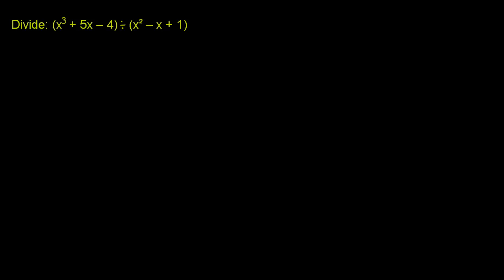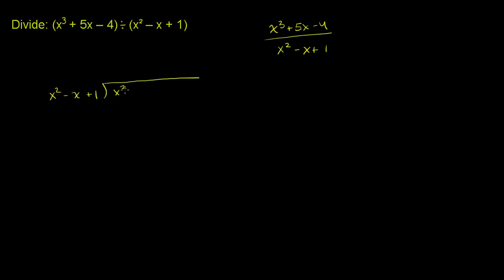Just to see the different ways we could rewrite this, we could rewrite this as x to the third plus 5x minus 4 divided by x squared minus x plus 1. Or maybe the best way to write it in this circumstance, since we're going to do algebraic long division, is to write it as x squared minus x plus 1 divided into x to the third plus. I'm going to leave some blank space here — we don't have an x squared term, but I'm going to leave space for it so that we can align everything in the proper place when we actually do the division.